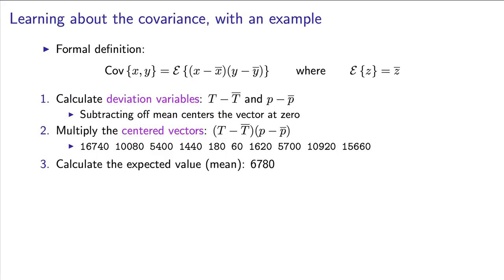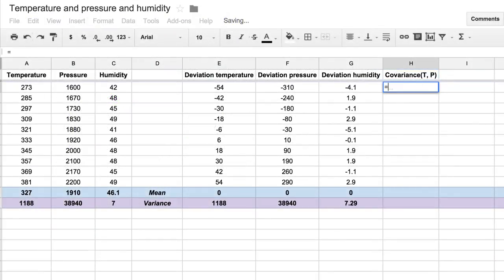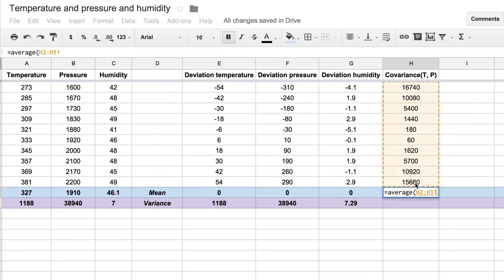Now, the covariance has units as well. It has units of the original variables multiplied by each other. This can be awkward to work with and awkward to interpret. In this particular example, the covariance of temperature with pressure would have a value of 6780 kelvin times kilopascals.